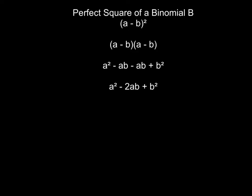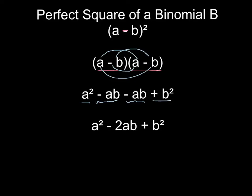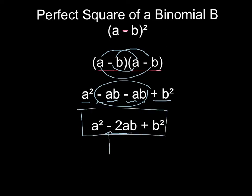Here is the second form of a perfect square binomial. The only difference is we have a subtraction sign instead of an addition sign, but the process is the same. So a minus b squared means you have the binomial twice. If we were to FOIL this: a times a is a squared, a times negative b is negative ab, negative b times a is negative ab, and negative b times negative b is a positive b squared. Combine these terms: negative 2ab. So the pattern is the same as before except we have a subtraction sign in the middle.